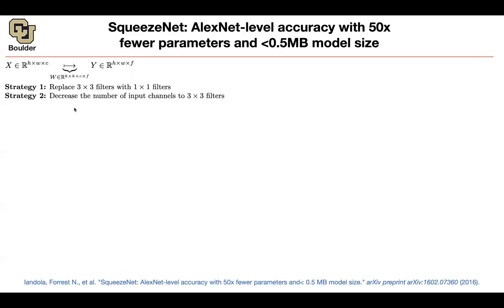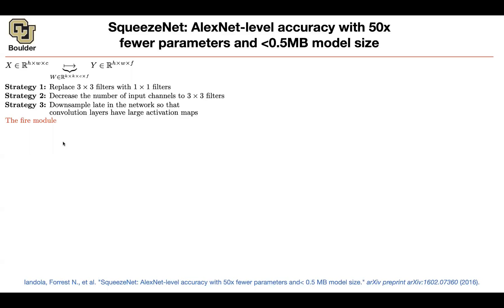Strategy three is to downsample late in the network using strides, which allows convolutions to have larger activation maps, increasing accuracy. All three strategies show up in the fire module — at least the first two appear directly in the fire module. What happens is you first squeeze the number of channels using 1x1 convolutional filters, then you expand.